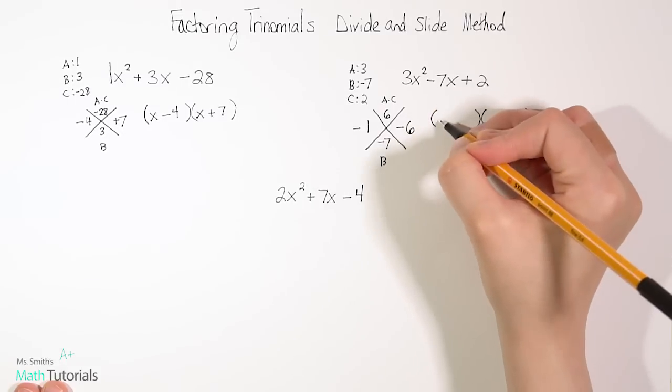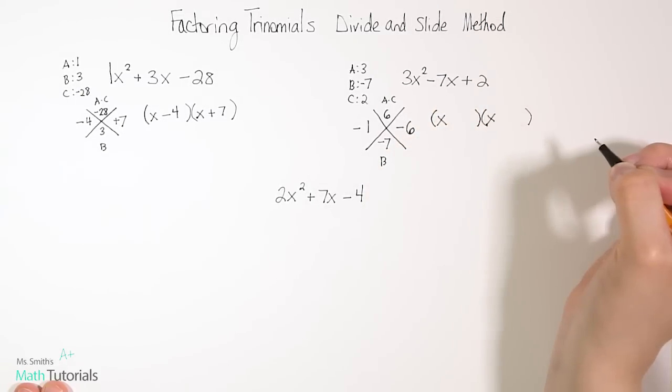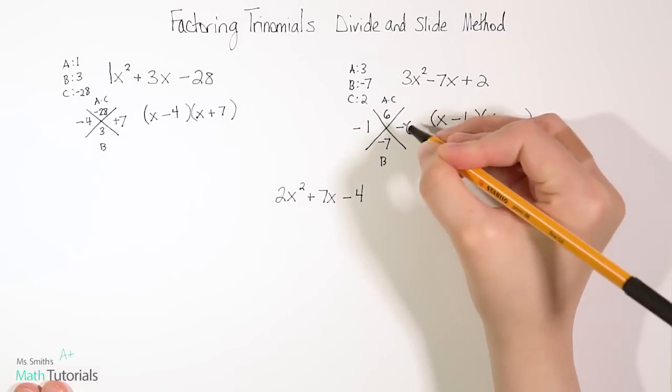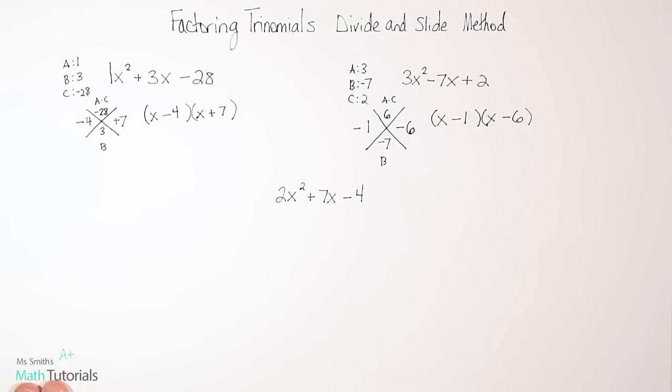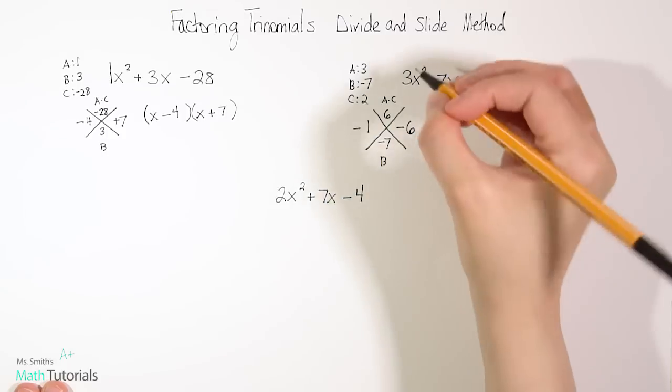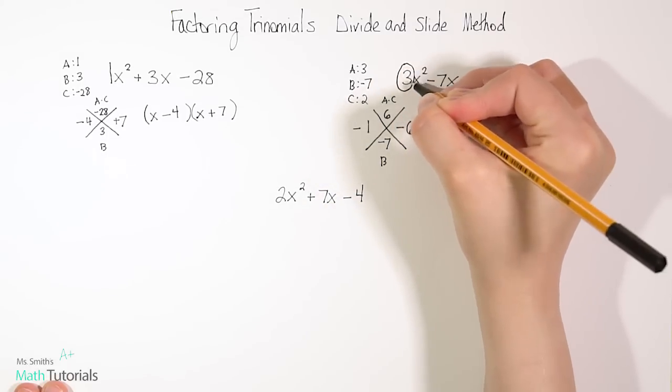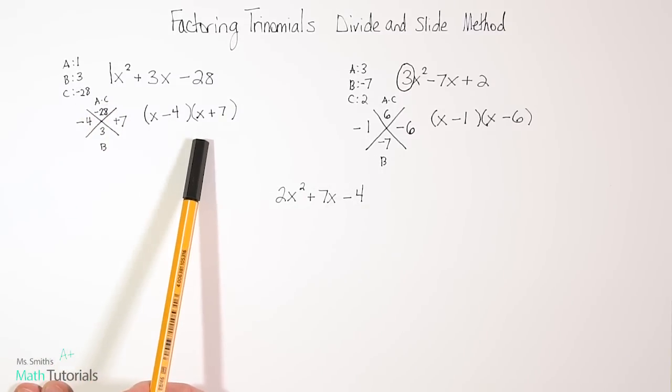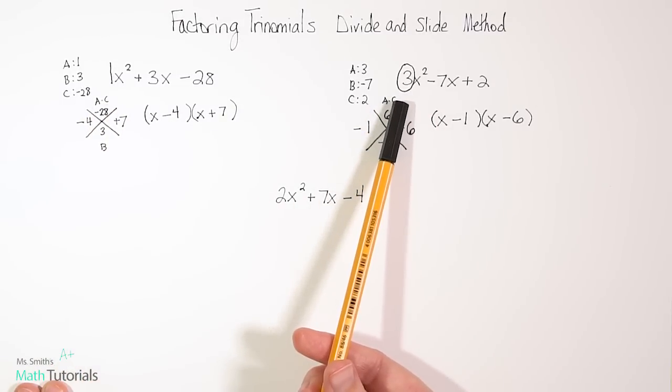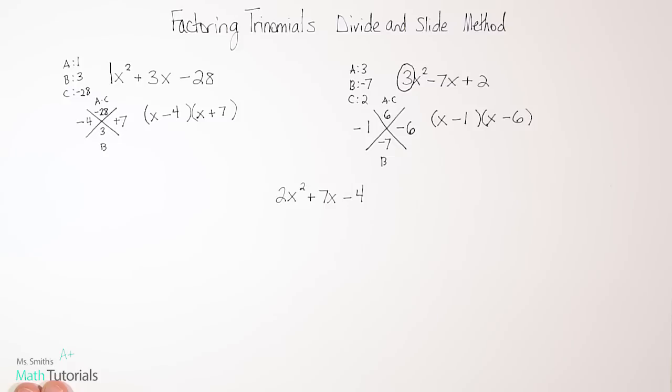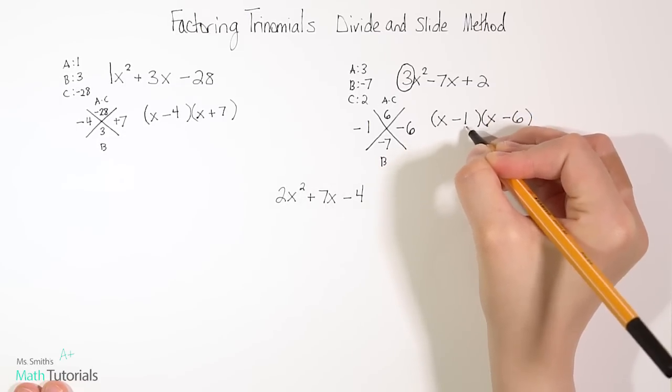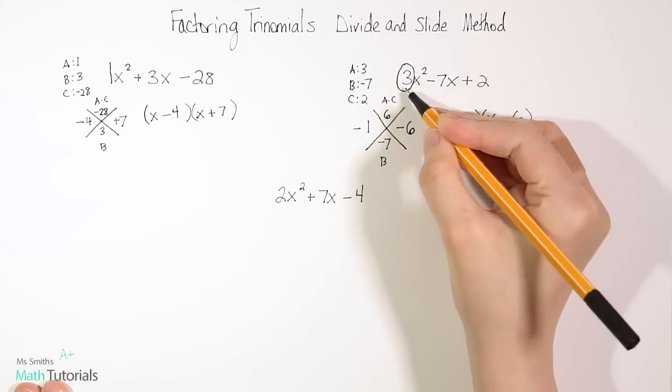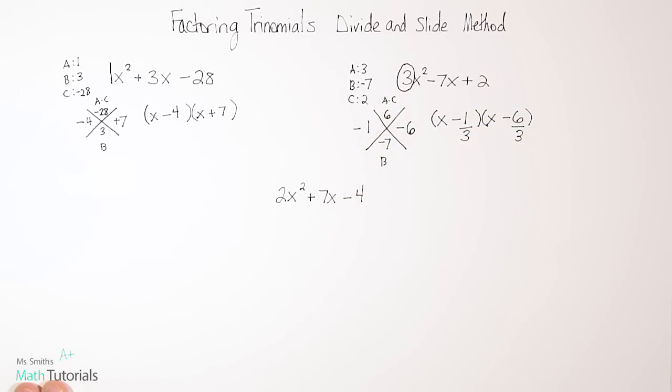So let me build my almost answer. And you'll see why it's our almost answer. Our variable is x. So I put one there, one there. And now I just fill in the factors. So minus 1 and minus 6. Now I'm almost done, but I have to remember that this first a value was not a 1. So when it's a 1, you're done. But when it's anything other than 1, we have one more step to do. And it's where that divide and slide or the bottoms up name comes in. So we take the second term of each of these binomials and we divide by that number on both of them. If we can divide and get a whole number, then we'll write the whole number. But if we cannot divide and get a whole number, we're going to do the slide method.